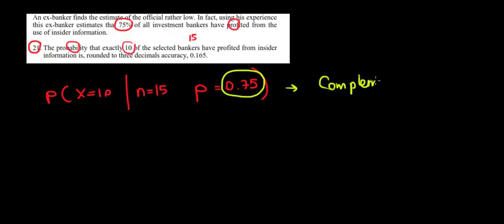We're going to use complement probability. How are we going to do that? Well, if we expect 10 people to profit from the insider information, then that's going to be the same as the probability